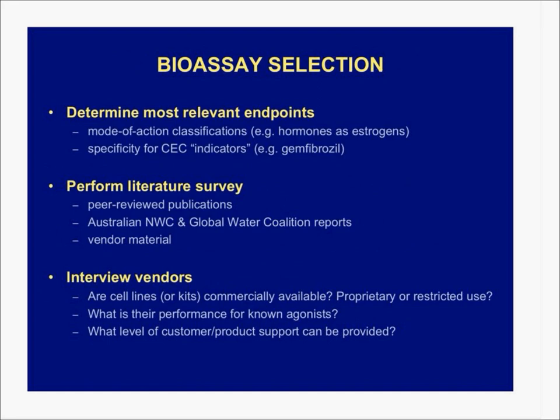In terms of selecting the bioassays, we tried to get mode-of-action classifications based on the list of compounds we already had — hormones such as estrogen, pharmaceutical agents like gemfibrozil. We knew there are in vitro methods for these compounds available commercially, so we targeted those first. Just to be aware, the last count I heard, there are about 600 different in vitro assays that EPA is using in their screening process. We got eight. The sky's the limit, but we wanted to start simple and focus on compounds recommended for monitoring.